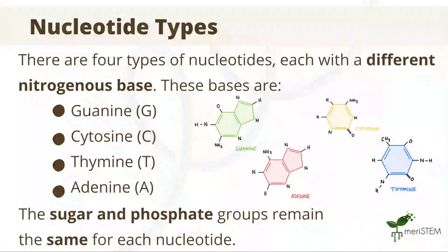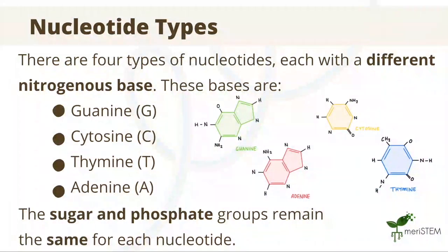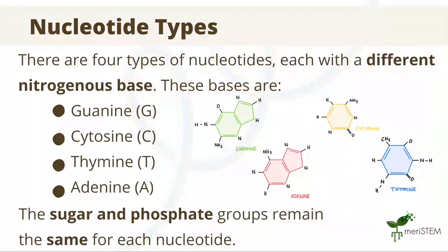There are four types of nucleotides, each of which contain different nitrogenous bases. These bases include guanine, cytosine, thymine, and adenine — or GCTA, respectively — and on the right side we can see what these bases look like. Whilst there are four different nitrogenous bases, the sugar and phosphate group are all the same in every nucleotide.